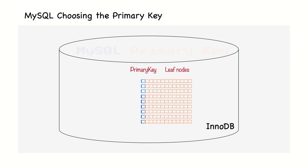Everything in MySQL is an index. InnoDB, which is the main storage engine of MySQL, uses an index to organize the data in the tables. This index is based on the primary key. When we work with an index-organized table as the one in MySQL, the choice of the primary index is very important.